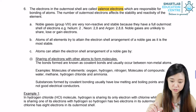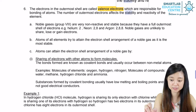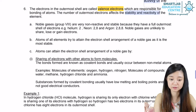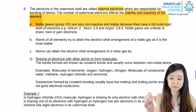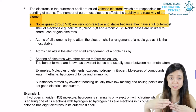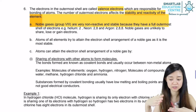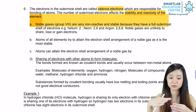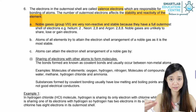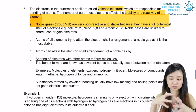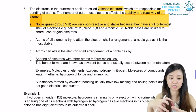The number of outermost shell electrons actually affects the stability and the reactivity of the element, because if it doesn't have 8 electrons in the outermost shell, then it will have to bond with another atom to gain 8 electrons in the outermost shell.